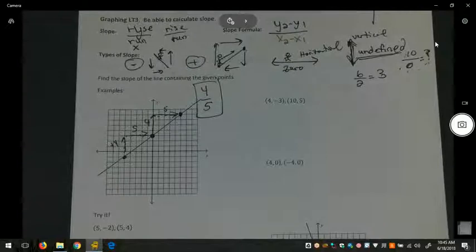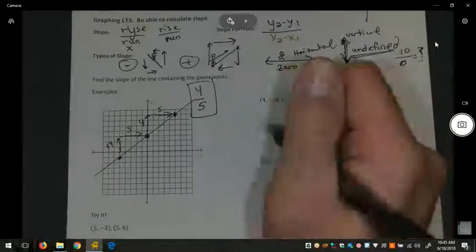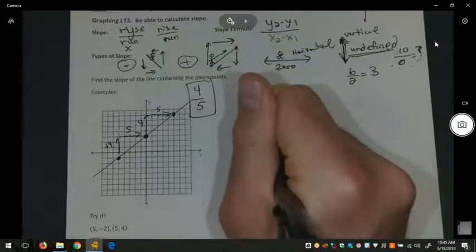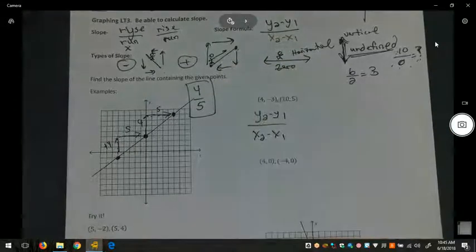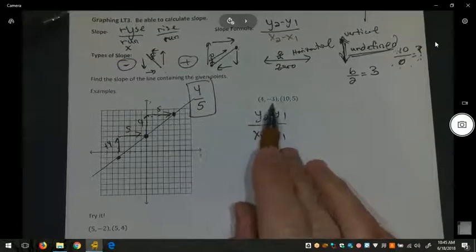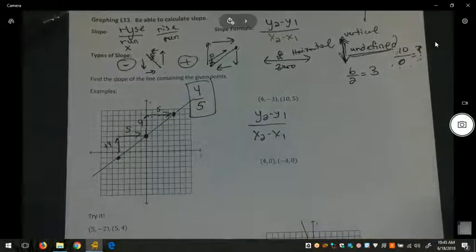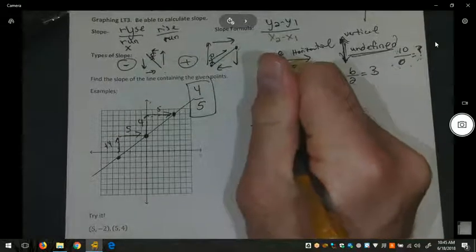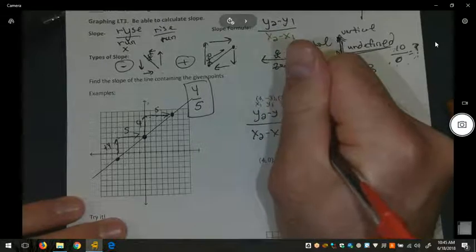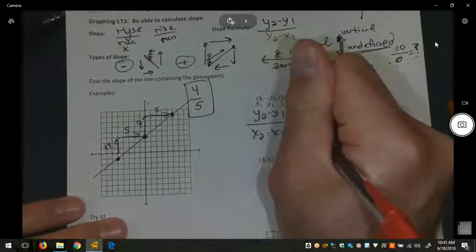For the next two examples, we're actually going to use the slope formula, which is to take the y's and subtract them and take the x's and subtract them. It doesn't matter which point you choose to be your x sub one, y sub one, and which one you choose to be your x sub two, y sub two.